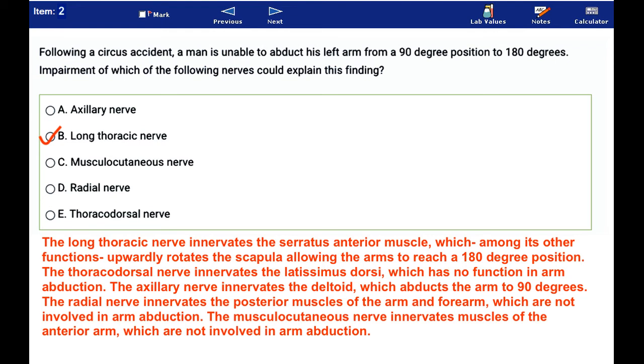The thoracodorsal nerve innervates the latissimus dorsi, which has no function in arm abduction. The axillary nerve innervates the deltoid, which abducts the arm to 90 degrees. The radial nerve innervates the posterior muscles of the arm and forearm, which are not involved in arm abduction. The musculocutaneous nerve innervates muscles of the anterior arm, which are not involved in arm abduction.